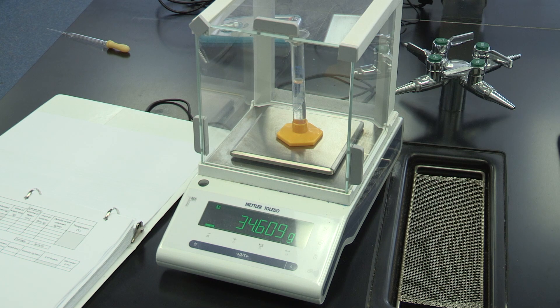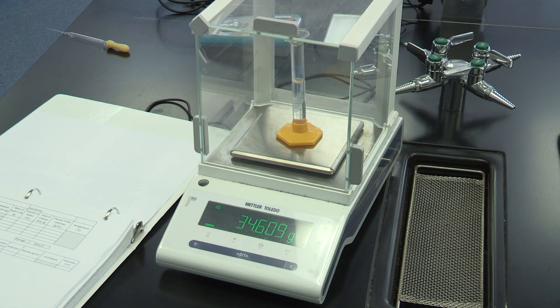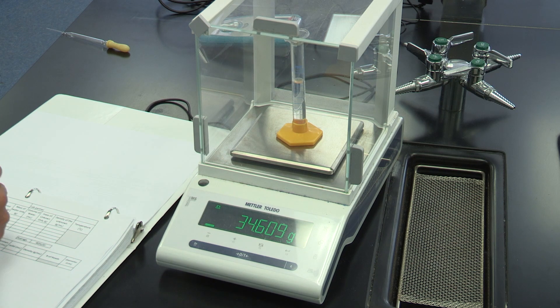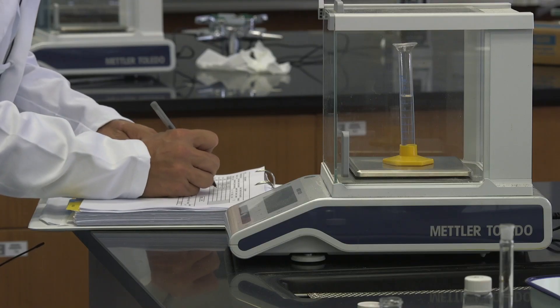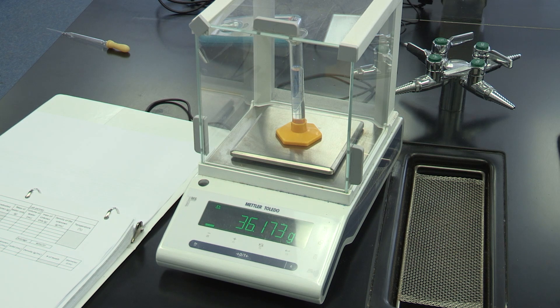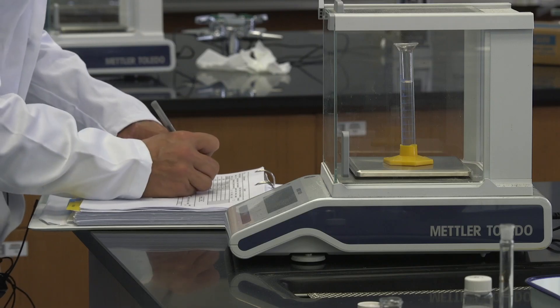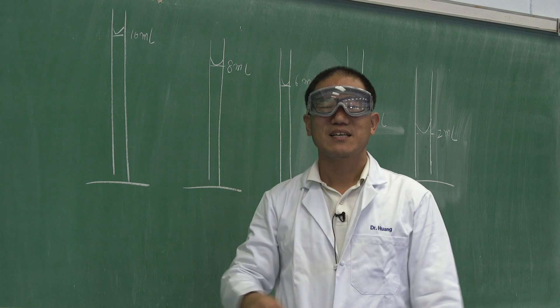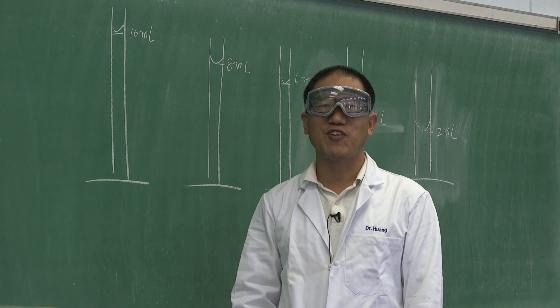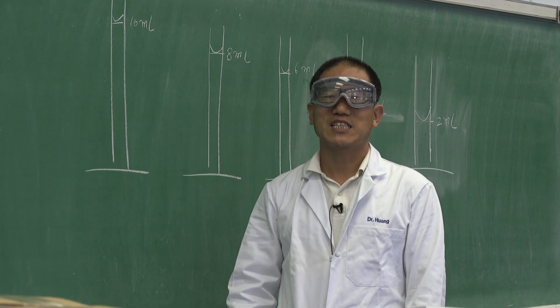With unknown liquid at 10 milliliter mark, the mass is 36.173 grams. Then, this will be the end of the first part of experiment 1.